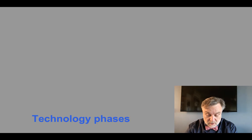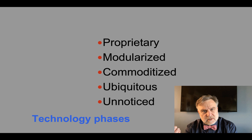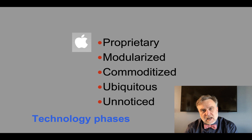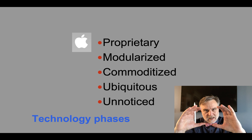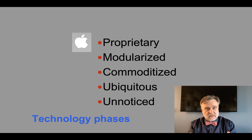I'll add one more thing — architectural innovation — which is especially important for information technology: the notion of technology phases. Technologies tend to go through phases: proprietary technology, modularized technology, commoditized technology, and then it can become ubiquitous or unnoticed. A proprietary technology is where one company controls everything — Apple is that company now. They contain everything; if you buy an Apple product you have to use Apple software throughout. The advantage is they can create a wholistically good experience; the problem is it tends to become expensive and you get locked in.